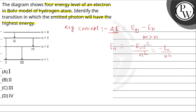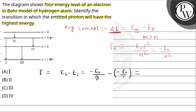Whichever transition has the largest delta E value will release the highest energy photon. Let's calculate delta E for each transition. For transition 1, which goes from 3 to 1: E3 minus E1 equals minus E-naught over 9 minus minus E-naught, which equals E-naught minus E-naught over 9, giving us 8E-naught over 9. Note that E-naught equals 13.6 electron volts.